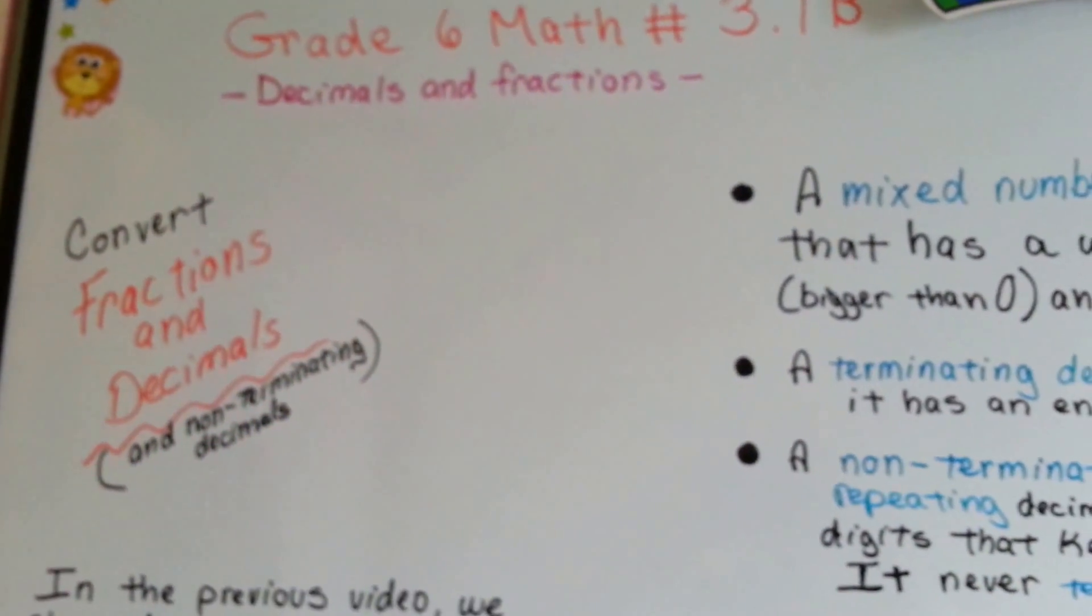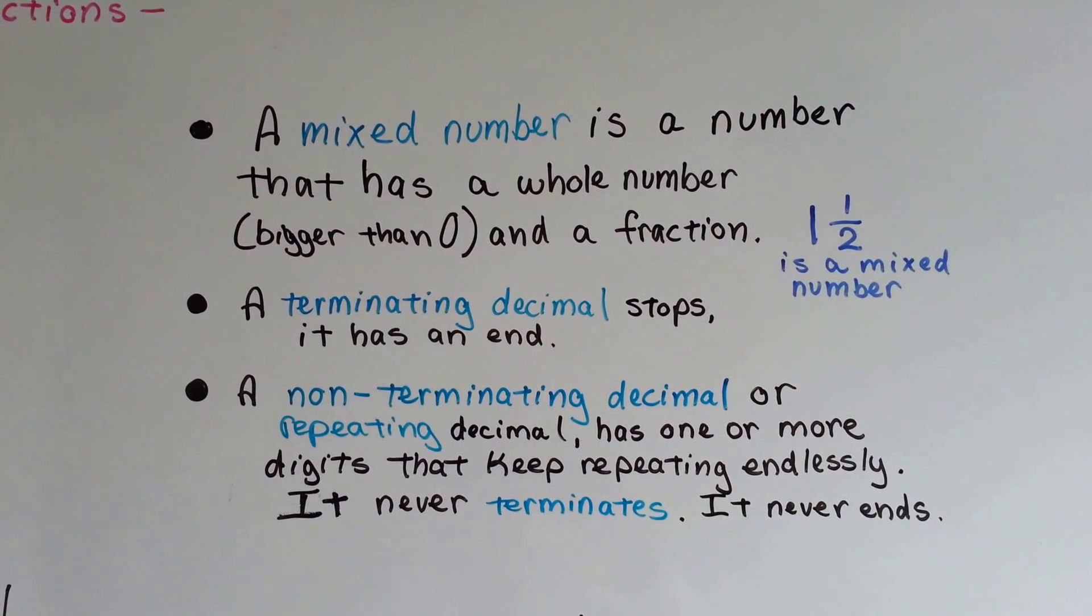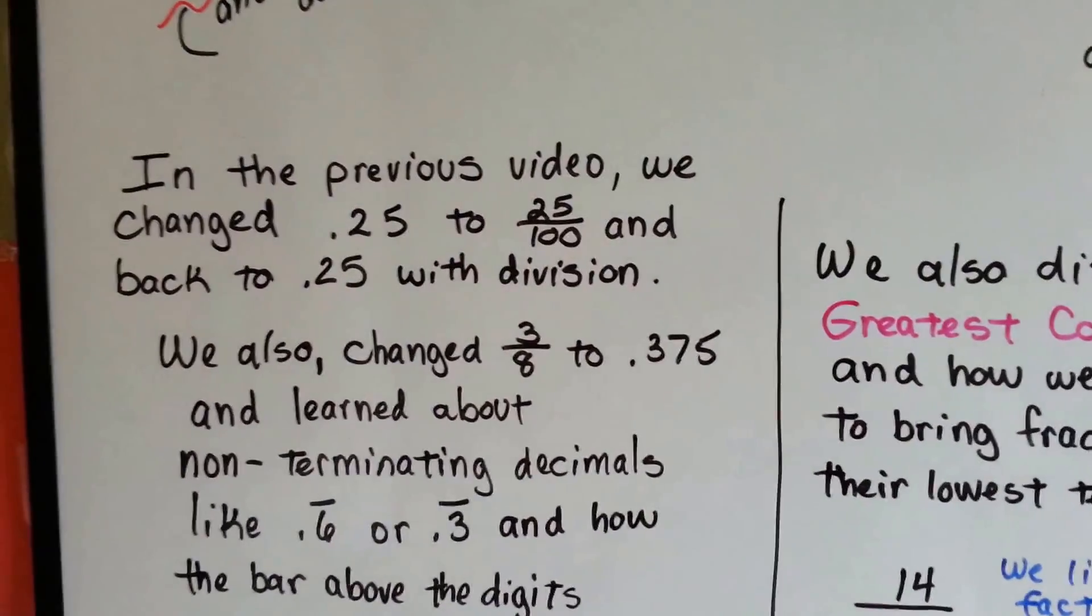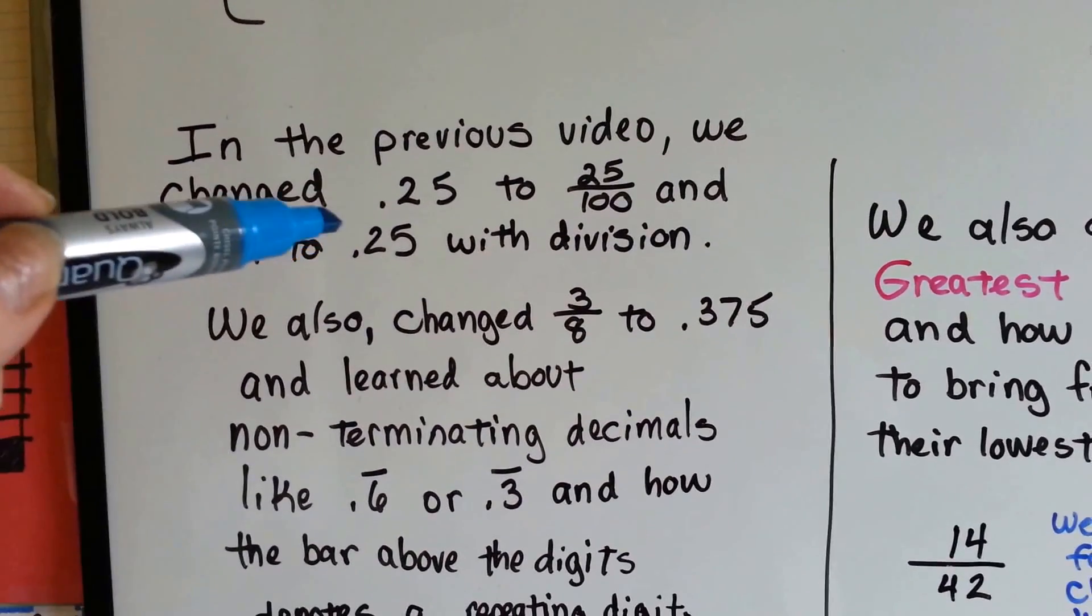In video 3.1a, we talked about mixed numbers, we talked about terminating decimals and non-terminating decimals, and we actually changed .25 to 25 hundredths and back to .25 with division.